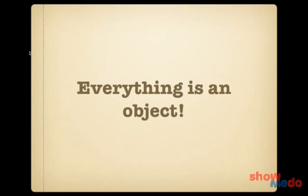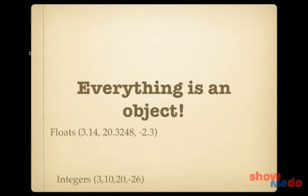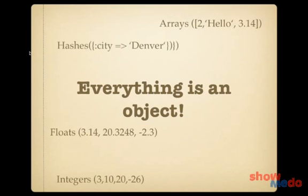In Ruby, everything is an object. Integers like 3, 10, 20, minus 26 are objects. Floats like 3.14, 20.3, 248, or minus 2.3 are objects. Arrays like [2, 'hello', 3.14] are objects. And hashes like {city: 'Denver'} are objects. Everything in Ruby is an object, so you're going to be dealing with objects a lot.